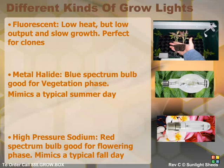The most commonly used grow lights are fluorescent, metal halide, and high pressure sodium. Each has its advantages that I will briefly cover. All three light bulb types require a light ballast, which is a transformer that converts your household power into a usable form for the light.